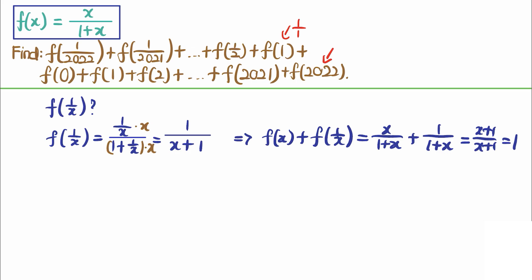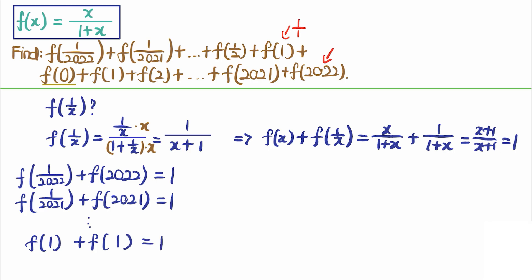Now we can use this fact. If we exclude f of 0, we can pair every sum: f of 1 over 2022 plus f of 2022 equals 1, similarly f of 1 over 2021 plus f of 2021 equals 1, and so on until f of 1 plus f of 1 equals 1. Then we add f of 0, which is 0, so the whole sum is just 2022.